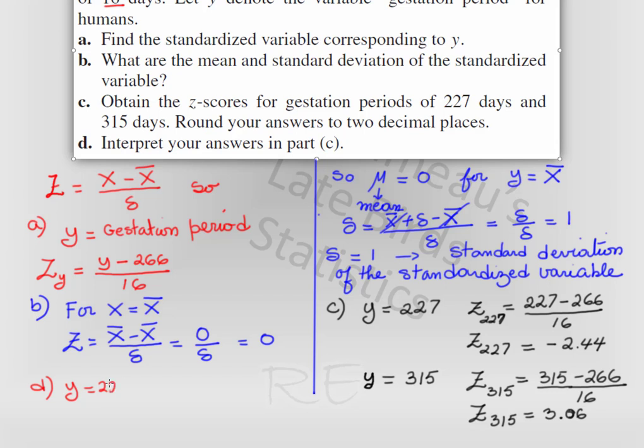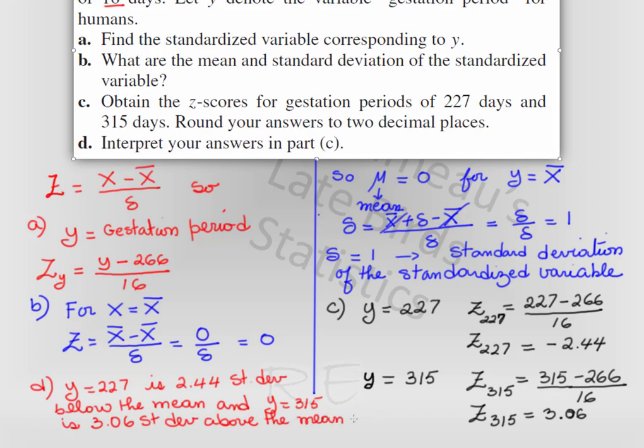For y equal to 227, the data point is 2.44 standard deviation below the mean because it's negative 2.44. And for 315, the z-score indicates that the number is 3.06 standard deviation above the mean.